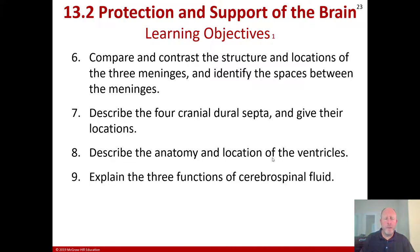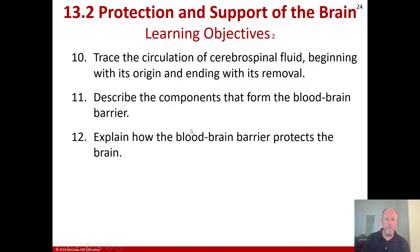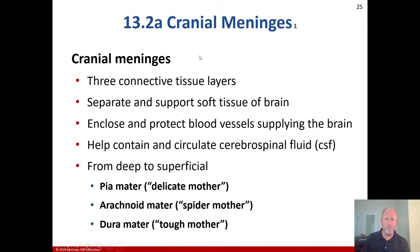Now we're talking about Chapter 13 of anatomy and physiology: protection and support of the brain with the brain and cranial nerves. After this section we should be able to compare and contrast the structure and locations of the three meninges, identify the spaces between the meninges, describe the four cranial dural septa and their locations, describe the anatomy and location of the ventricles, explain the three functions of cerebrospinal fluid, trace circulation of CSF from origin to removal, and describe the components that form the blood-brain barrier.